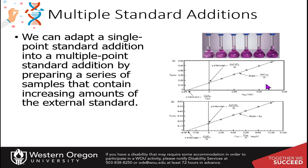For this method, the equation gives you a slope of Ka times the concentration of the standard over the final volume, and a y-intercept of Ka times the concentration of your unknown (analyte) times the volume of the analyte over the final volume. The x-intercept gives you the negative concentration of the analyte times the volume of the analyte over the concentration of the standard. So you can use the x-intercept along with the known standard concentration and sample volume to calculate the analyte concentration.